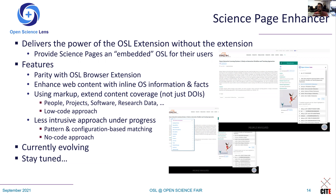In addition, content providers could enhance web content with inline open science information and facts, extend integration with custom markup in their pages — where content coverage would be expanded not just to DOIs but also to people, projects, software, research data, and any other information that the OpenAIRE graph exposes.